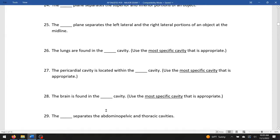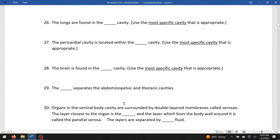The blank separates the abdominal pelvic cavity from the thoracic cavity. That's the muscular rainbow, the sheet of muscle called the diaphragm. Organs in the ventral body cavity are surrounded by double layered membranes called serosae. The layer closest to the organ is the visceral serosa, and the layer which lines the body wall is called the parietal serosa. These two layers are separated by serous fluid.